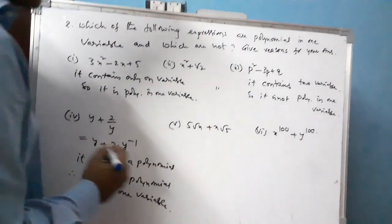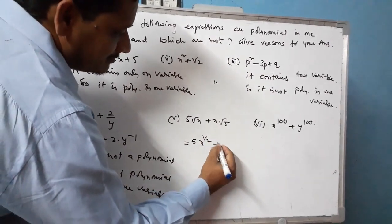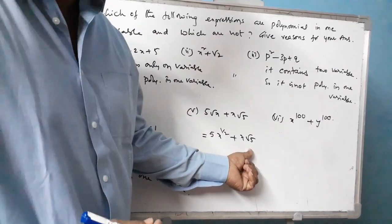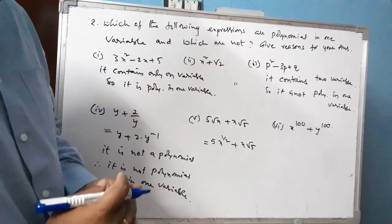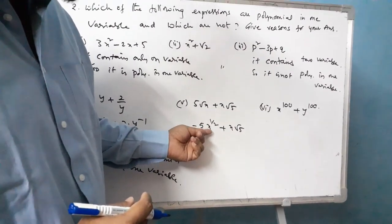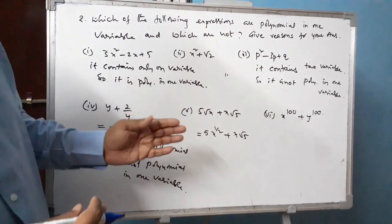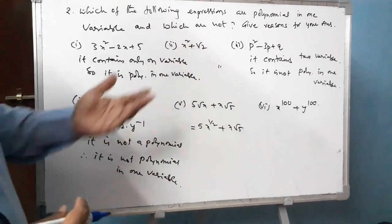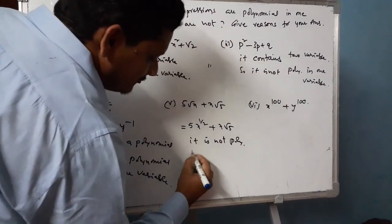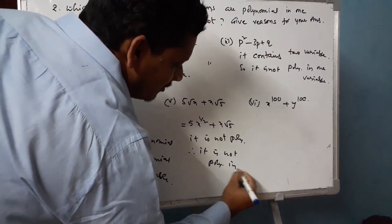Fifth expression: it can be written as phi times x to the power of 1/2 plus root 5 times x. The constants phi and root 5 are real numbers. However, the power of x is 1/2, which is a fraction. Fractions are not allowed in the exponent of a polynomial, so it is not a polynomial, and therefore not a polynomial in one variable.